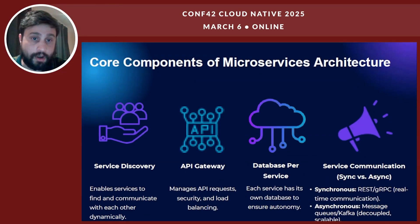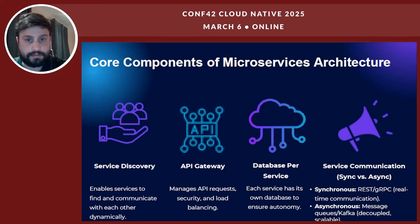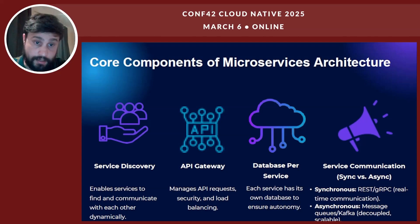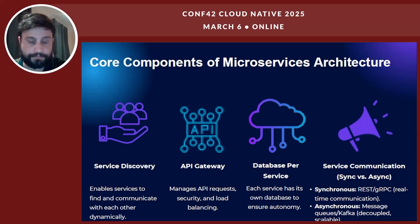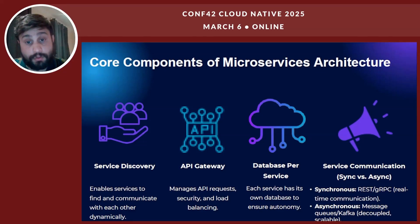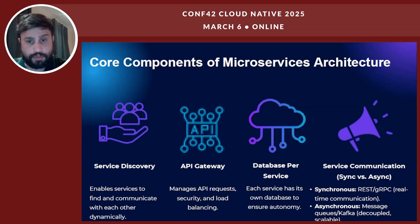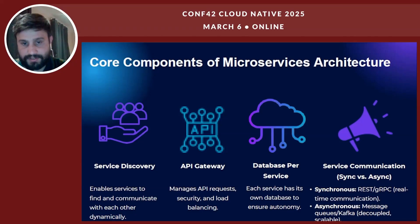Now let's look at the core components that make microservice communication work. Communication can be synchronous with REST or gRPC for real-time interactions, or asynchronous messaging like Kafka for decoupled communication. Service discovery ensures that microservices can dynamically find and interact with each other. An API gateway acts as the entry point, managing security, load balancing, and routing. Additionally, each service should have its own database to maintain independence. Together, these components create a robust and efficient microservices architecture.